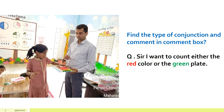In this slide I have added a real-life example. Find the type of conjunction and comment in the comment box. The question is: 'I want to count either the red color or the green plate.'